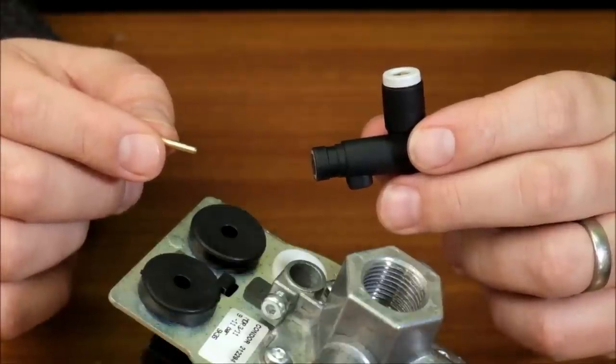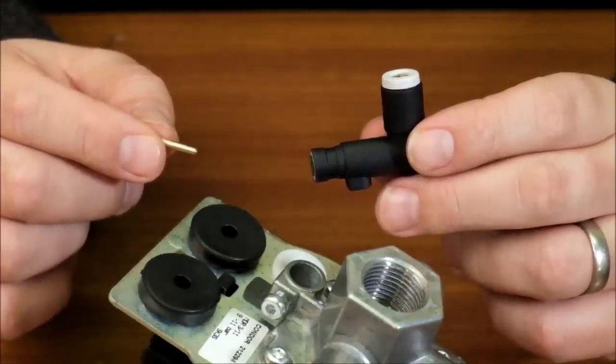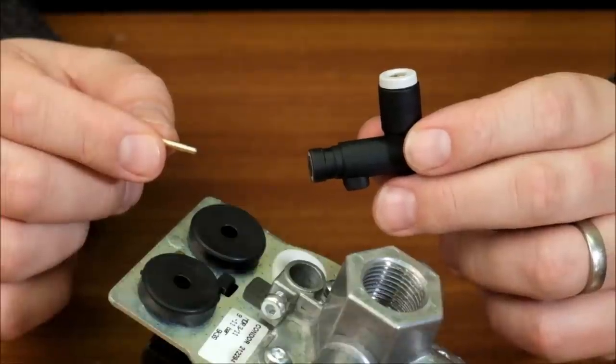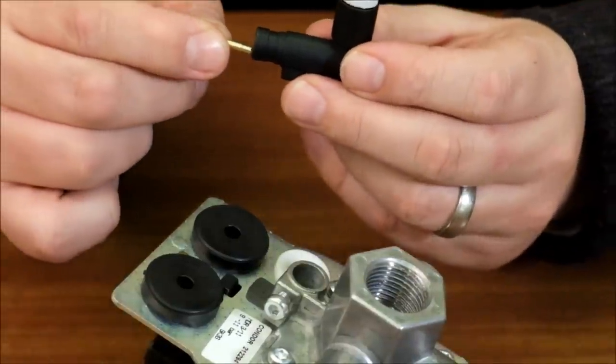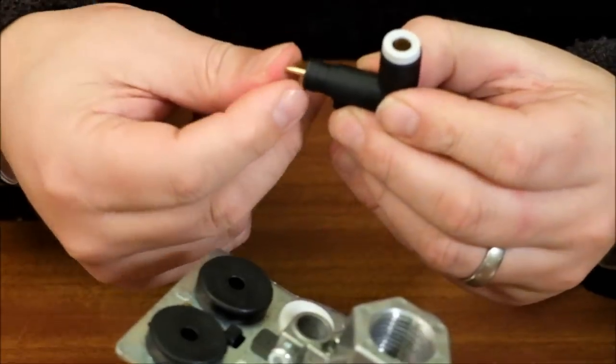The unloader valve will remove pressure from the piston and allow the compressor to start without stalling. This is fitted to the bottom of the switch with a retaining screw.